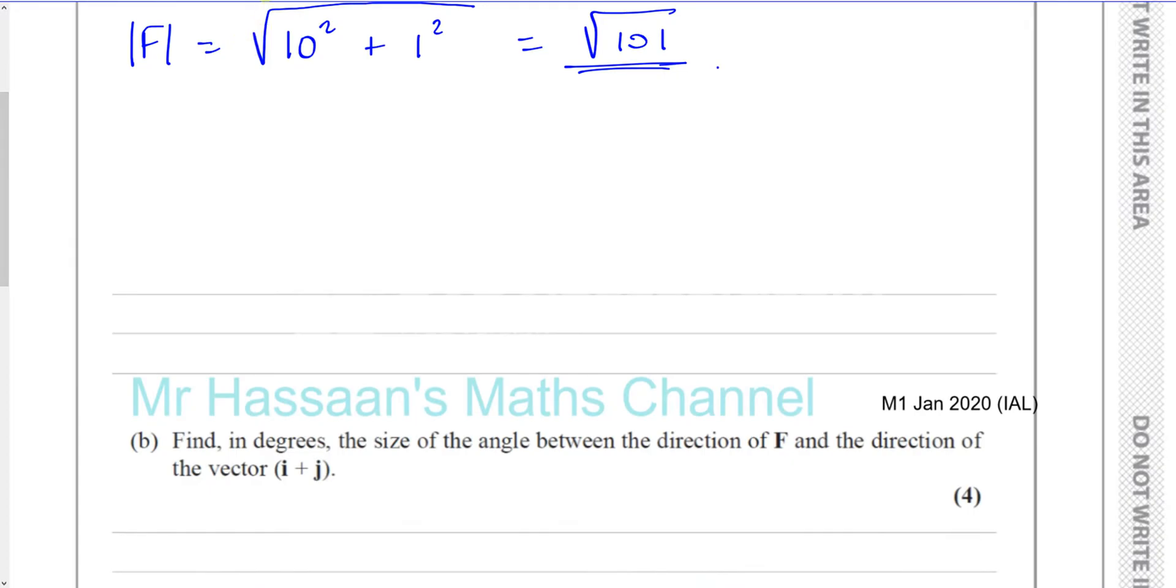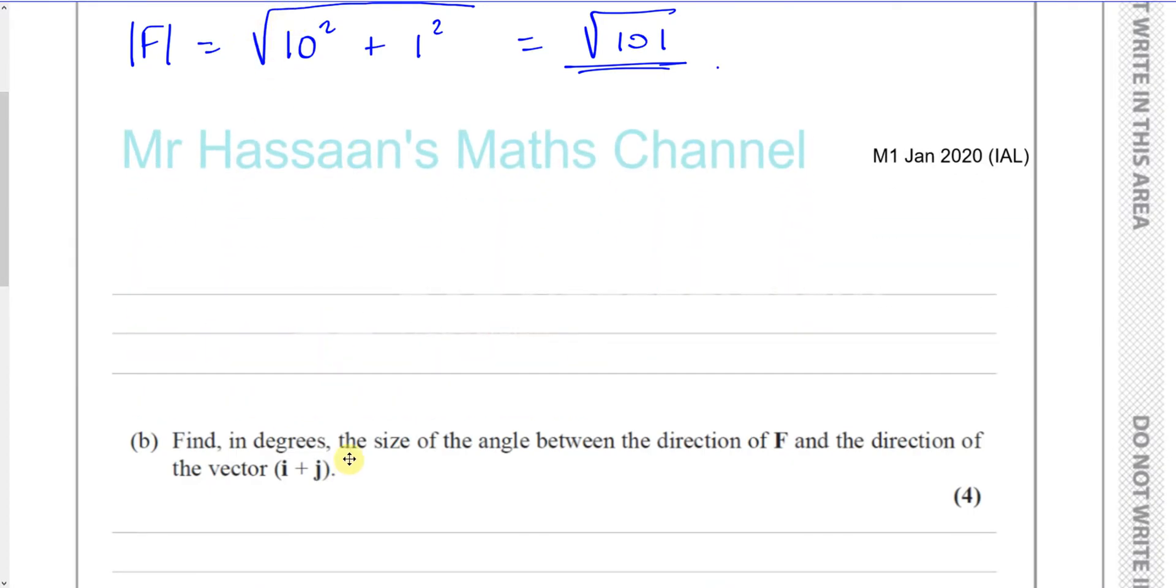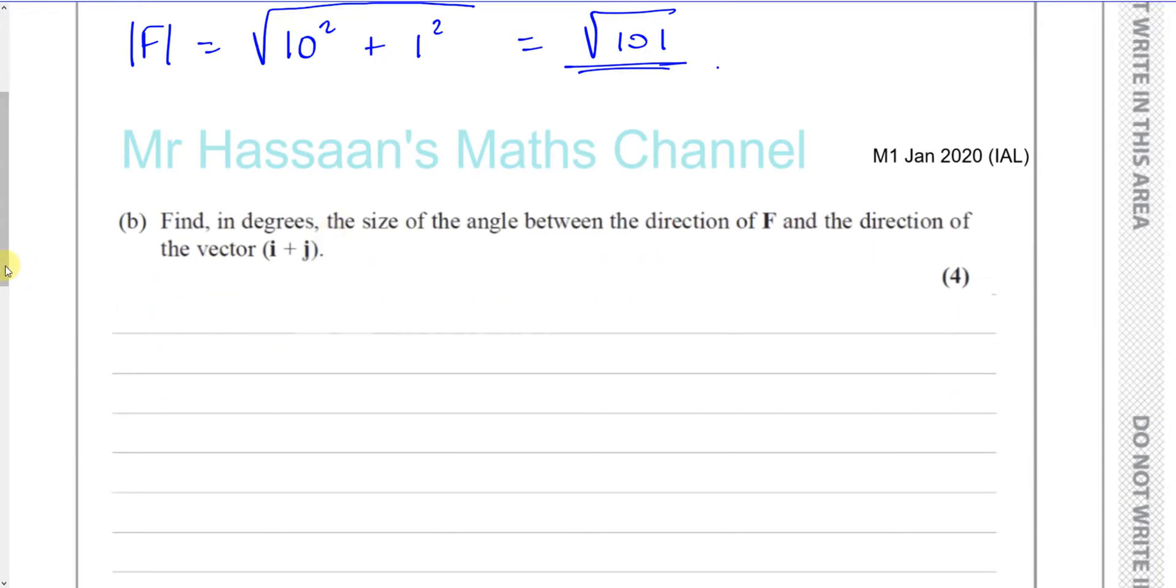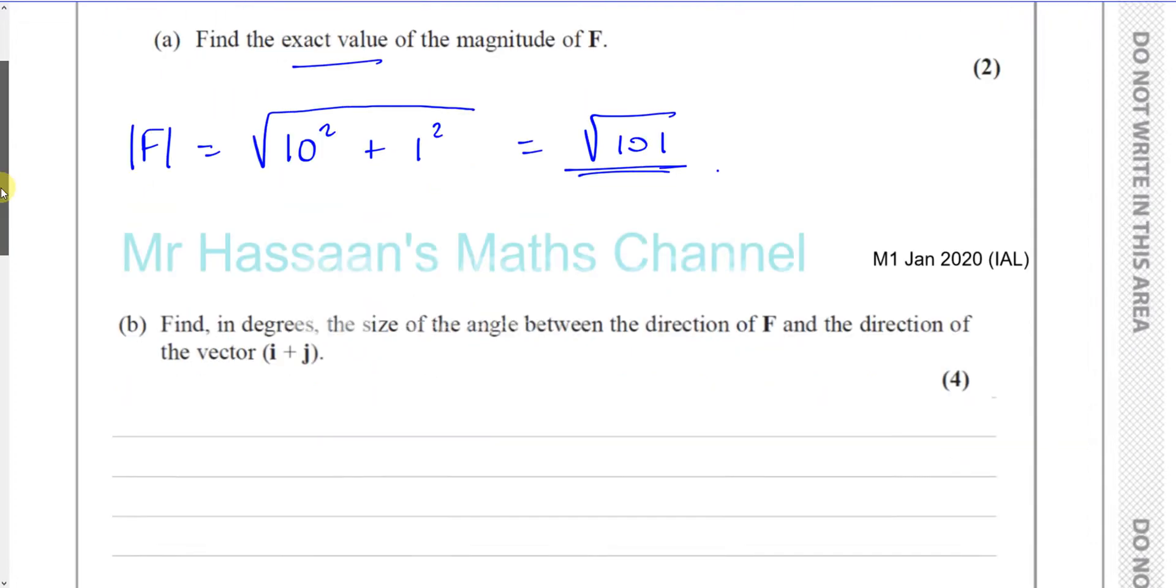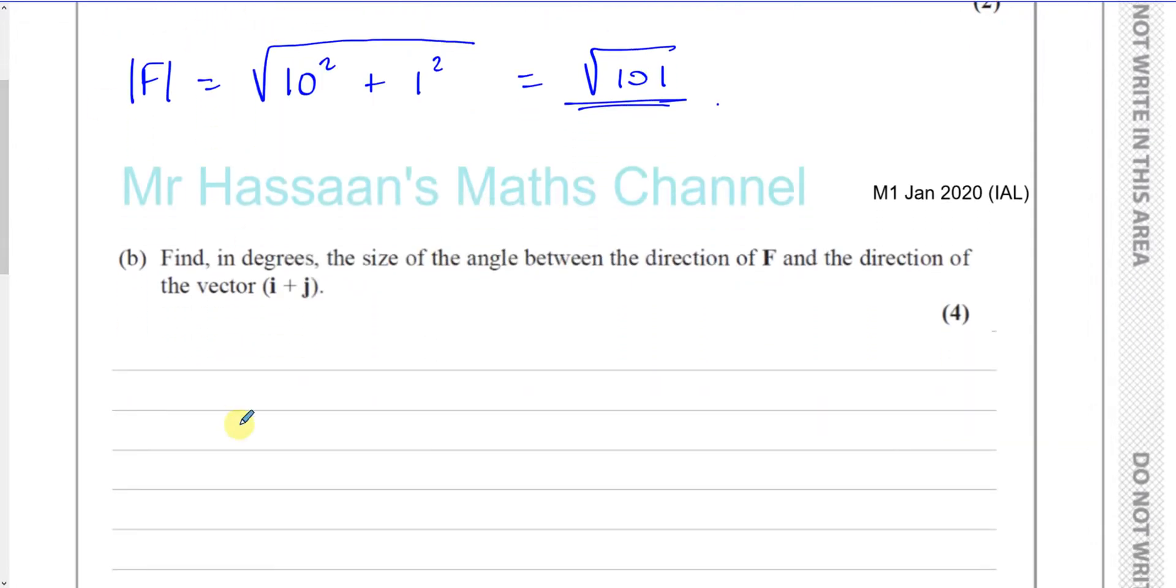Okay, then it's got part B. Make some more space here. Okay, then it says, find in degrees the size of the angle between the direction of F and the direction of the vector i plus j.